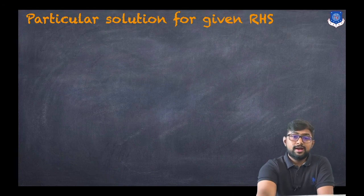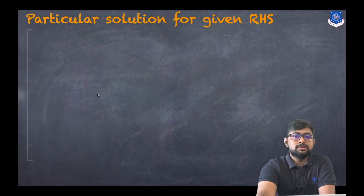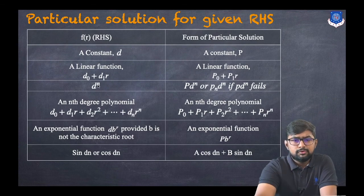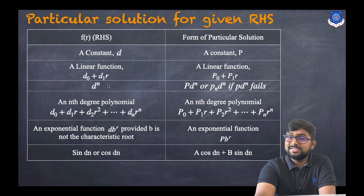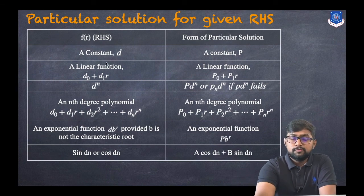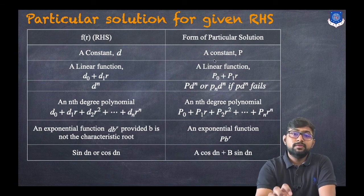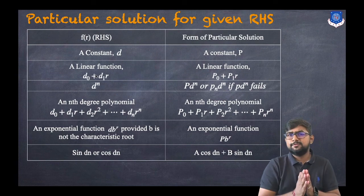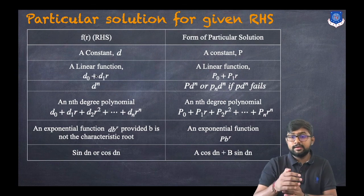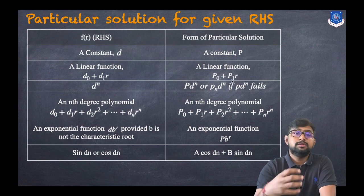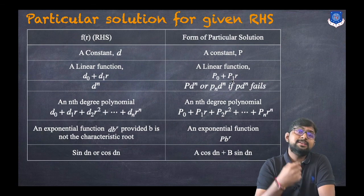According to the right-hand side, the choice of particular solution will change. There are six cases. First, if the right-hand side equals a constant, we choose p. Second case, if it is a linear function of the form d0 plus d1·r, we choose p0 plus p1·r. Third case, if the right-hand side is of the form d^n, we choose p·d^n, or p·n·d^n if the first fails.